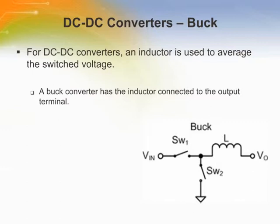A buck converter has the inductor connected to the output terminal. The DC average inductor current is equal to the output current. This converter will step down the input to produce a lower output voltage of the same polarity.